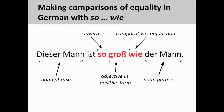German forms comparisons of equality in a similar manner. The sentence on screen is a translation of the English sentence in the previous slide. The noun phrase 'die Frau' is being compared to the noun phrase 'der Mann' — more precisely, it is a characteristic of the two objects, namely their height, that is being compared. The construction 'so...wie' consists of the adverb 'so' and the comparative conjunction 'wie', which introduces the comparative clause. You will note that the positive form of the adjective 'groß' appears between 'so' and 'wie', and that the verb can be omitted in the comparative clause.